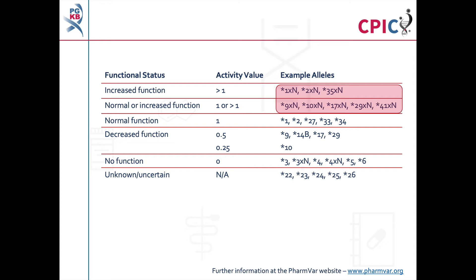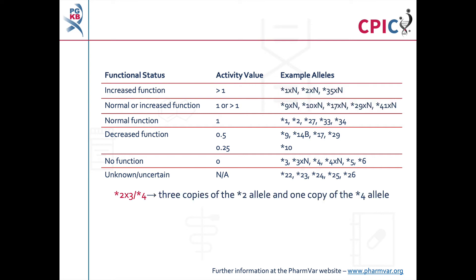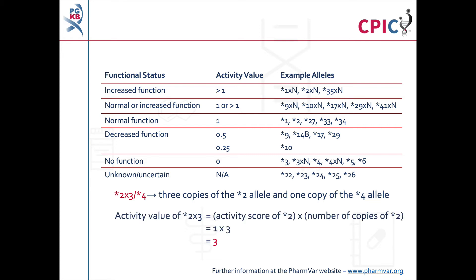It is important to note that patients can carry multiple copies of CYP2D6. Reports in the scientific literature have described cases where up to 13 copies of CYP2D6 were present in a patient's genome. Alleles present in multiple copies are given the suffix XN, where N is the number of copies of that allele present in a genome. For example, a patient with the genotype star 2 X3 star 4 has three copies of the star 2 allele and one copy of the star 4 allele. The activity score of alleles present in multiple copies is calculated by multiplying the activity score for the allele by the number of copies present — in this case, the activity score of star 2 X3 is 1 multiplied by 3, which equals 3. Further information about CYP2D6 alleles can be found at the PharmVar website at www.pharmvar.org.